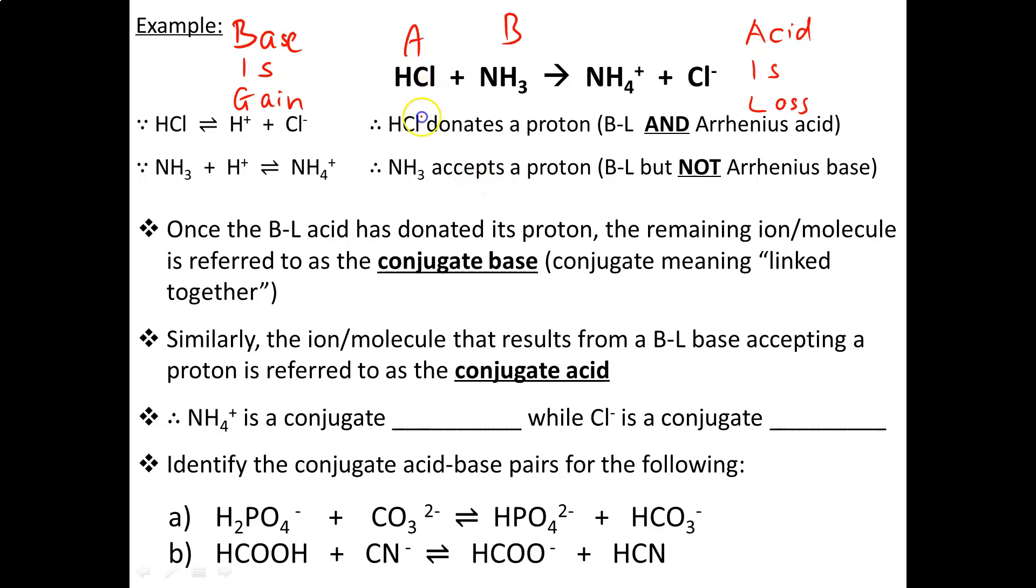Once the acid loses its H, loses its proton, it is considered to be the conjugate base. And vice versa, once the base has gained its proton, we call it the conjugate acid. Conjugate just means partnership. HCl once was an acid that lost protons, now it's considered a conjugate base. Ammonia was the base that gained a proton, now it's called a conjugate acid. They just switch places. While one was an acid, turns into a base. One was a base, turns into an acid.